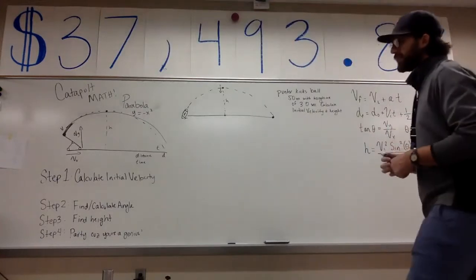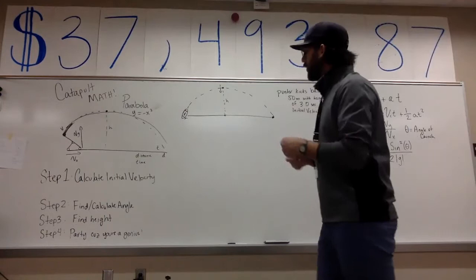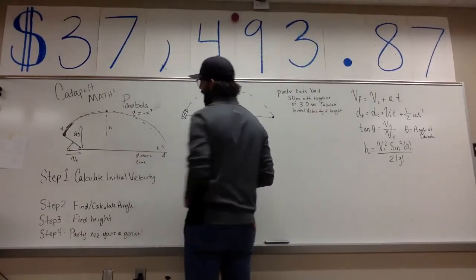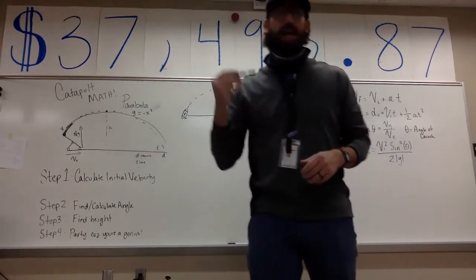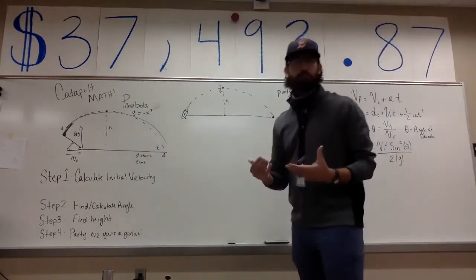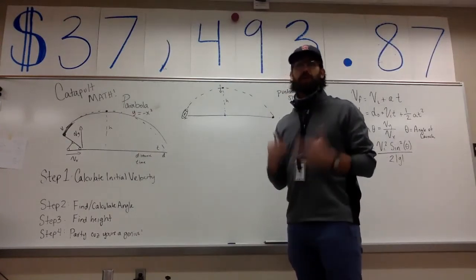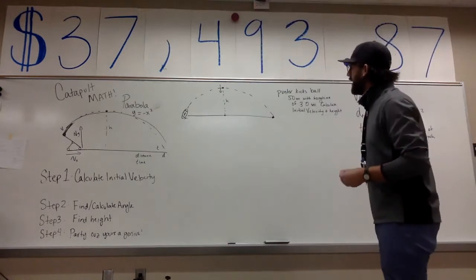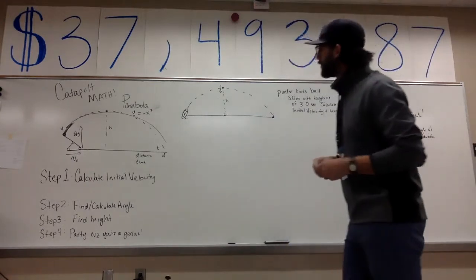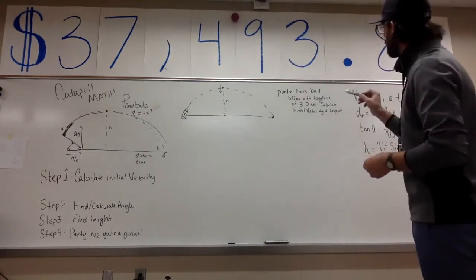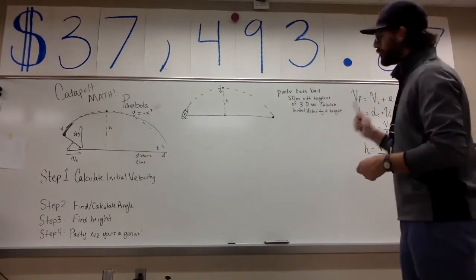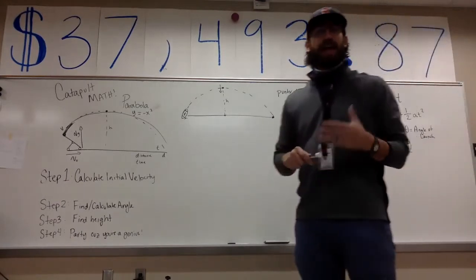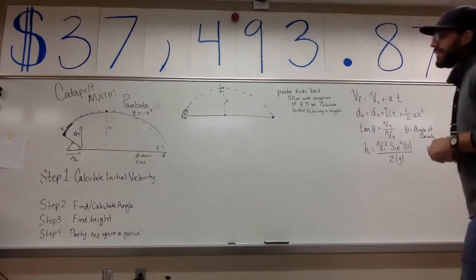We're going to figure out both the angle at which the projectile was launched as well as the maximum height it hits as it's flying through the air. Using a football example — it's football season, I'm a big Oklahoma State fan — our example says a punter kicks the ball 50 meters with a hang time of three seconds. We're going to calculate the initial velocity and the height.